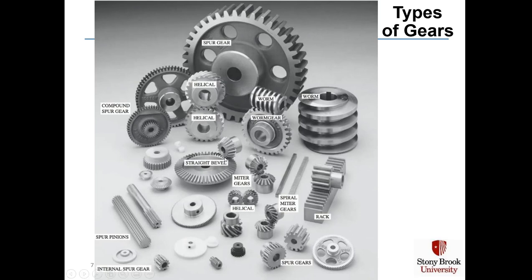In straight bevel gears, we change the direction of rotation by 90 degrees, as was shown in the differential. You can have internal spur gears, external spur gears, and a rack and pinion, where the pinion is round and the rack is straight — that's what is used in most steering mechanisms. You also have a worm and worm gear pair, where the worm is more like a screw thread, and driving from the worm can give an enormous increase in torque.